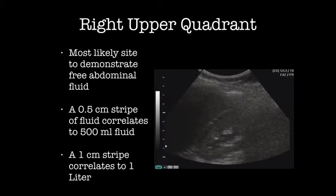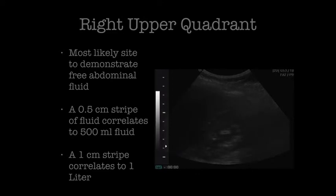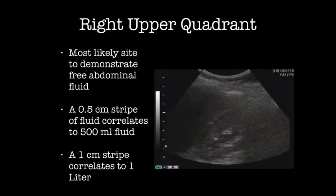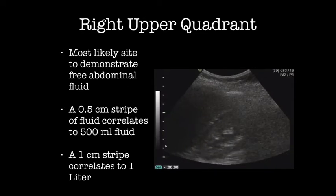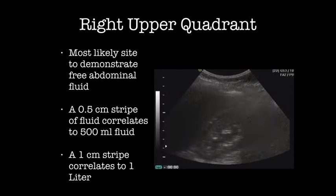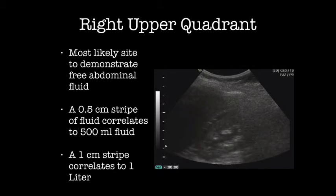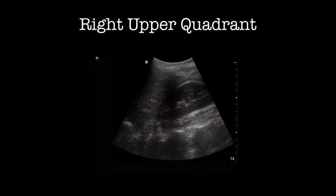There's a scale on the side of the ultrasound image, usually in centimeters. A general rule of thumb: the width of the stripe of fluid is proportional to the amount of fluid. A half-centimeter stripe is about half a liter of fluid. A centimeter stripe is about a liter of fluid.